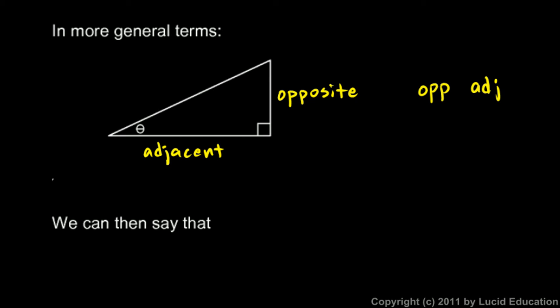Now if we name the sides like that we can then say that the tangent of theta is the opposite over the adjacent. And what I mean is the length of the opposite side divided by the length of the adjacent side, that length over that length, that ratio.